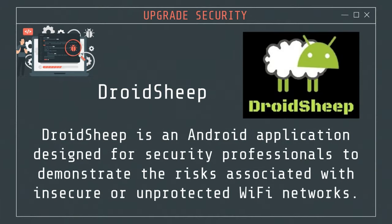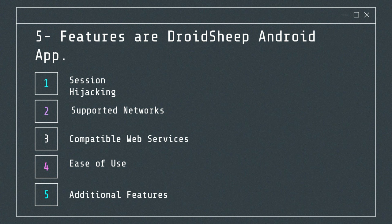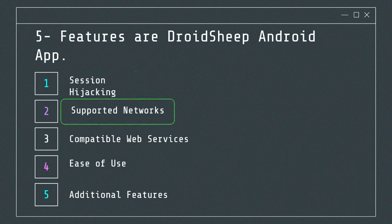Number 10: DroidSheep is an Android application designed for security professionals to demonstrate the risks associated with insecure Wi-Fi networks. It is commonly used for educational purposes to raise awareness about secure network communication. DroidSheep allows users to intercept and monitor network traffic of other devices connected to the same Wi-Fi network, particularly focusing on capturing unencrypted HTTP sessions. Features: Session hijacking — intercepts unencrypted HTTP session profiles on a Wi-Fi network. Supported networks — works on open unencrypted Wi-Fi networks, WEP-encrypted networks, and WPA/WPA2/PSK encrypted networks provided the attacker knows the network password.